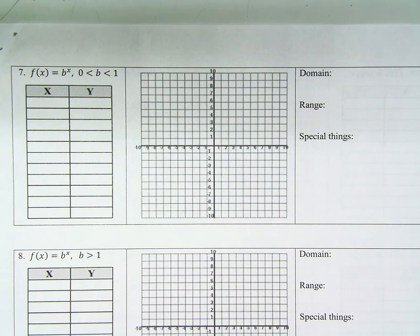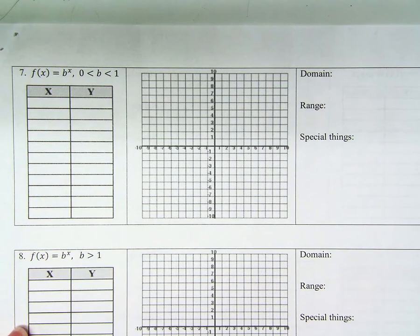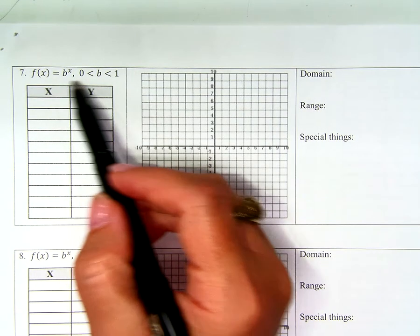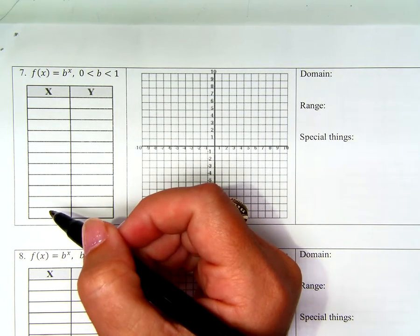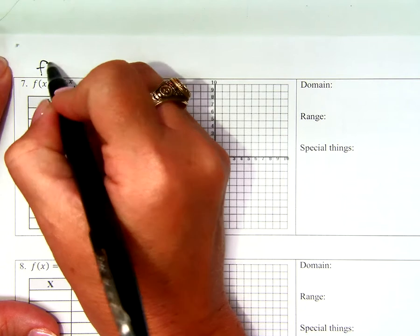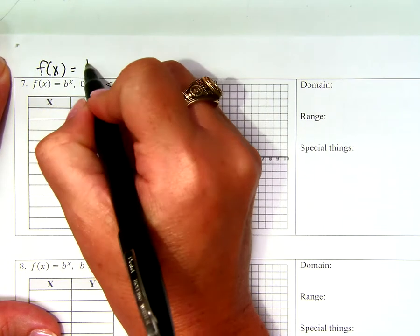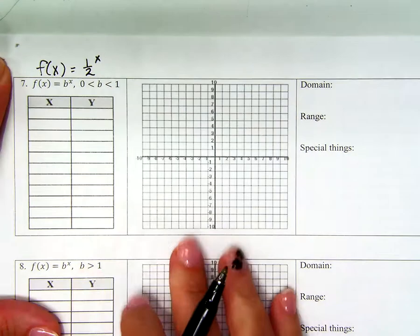So let's go over 7 and 8 real quick. I know that most of you have all the answers already written, but let's make sure that they're all correct. We want to make sure that our work is correct so we're studying the right thing. So what equation did we use for number 7? We used f of x equals 1 half to the x power.